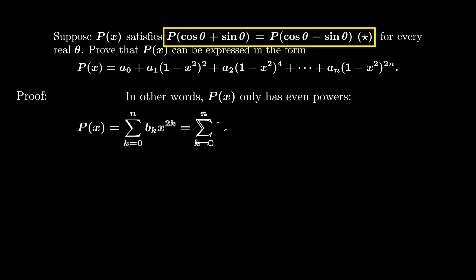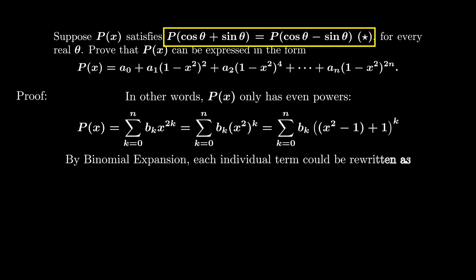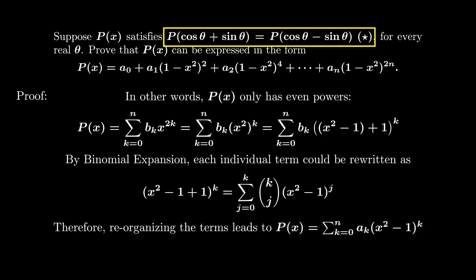Since the polynomial P is even, it is the sum of terms x^(2k) = (x²)^k. Now I'm going to use a trick by writing x² as (x² - 1) + 1. Then by applying binomial expansion, each term is a polynomial of (x² - 1). And this means that P(x) is also a polynomial of (x² - 1).